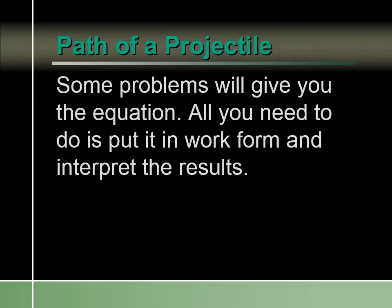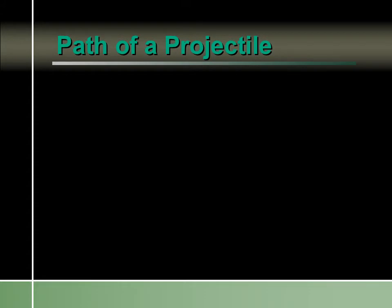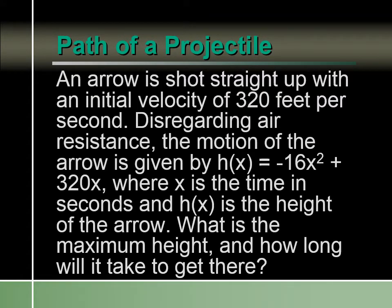Now let's look at the path of a projectile. Some problems will give you the equation, and all you have to do is put it into work form and interpret the results. For example, let's say we have an arrow shooting straight up with an initial velocity of 320 feet per second. The motion of the arrow is given by h(x) equals negative 16x squared plus 320x, where x is time in seconds and h(x) is the height of the arrow.